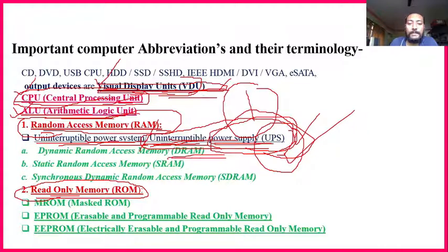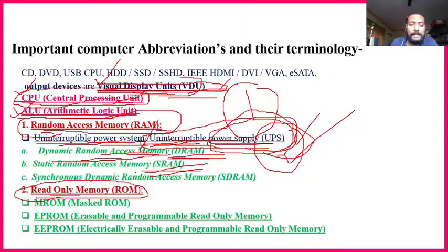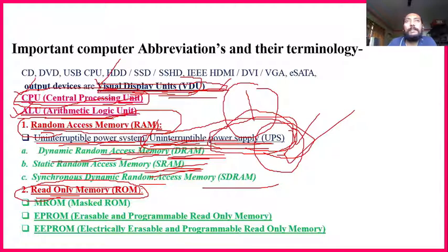DRAM — Dynamic Random Access Memory — comes under RAM. Full form you need to know. SRAM stands for Static Random Access Memory, and SDRAM stands for Synchronized Dynamic Random Access Memory — just for your information, not very important. The important ones here are CPU, VDU, ALU, and ROM.